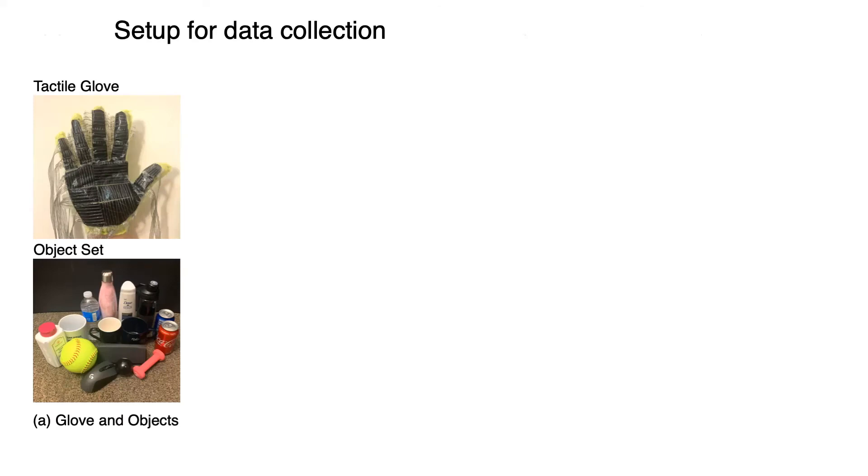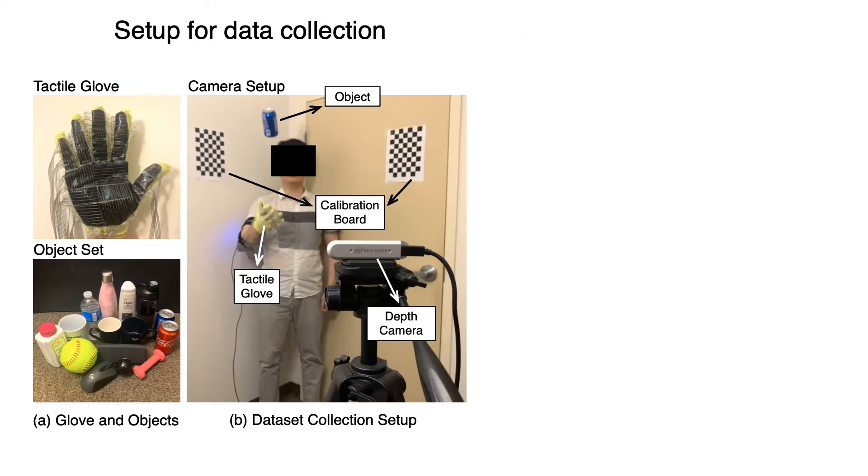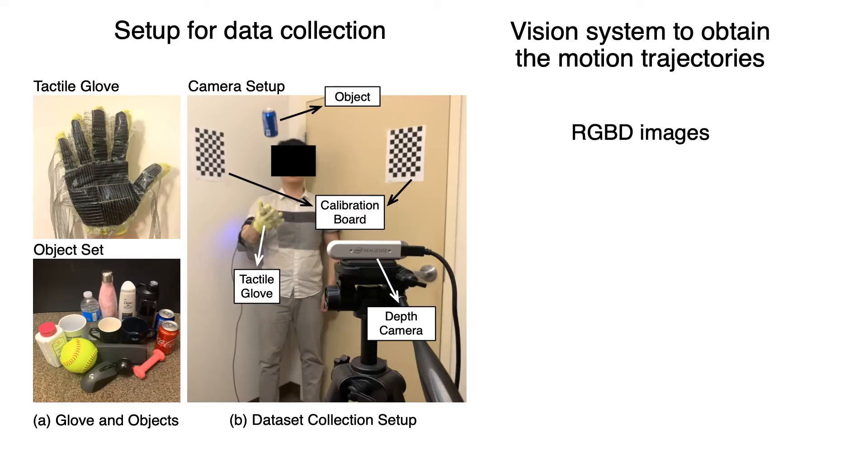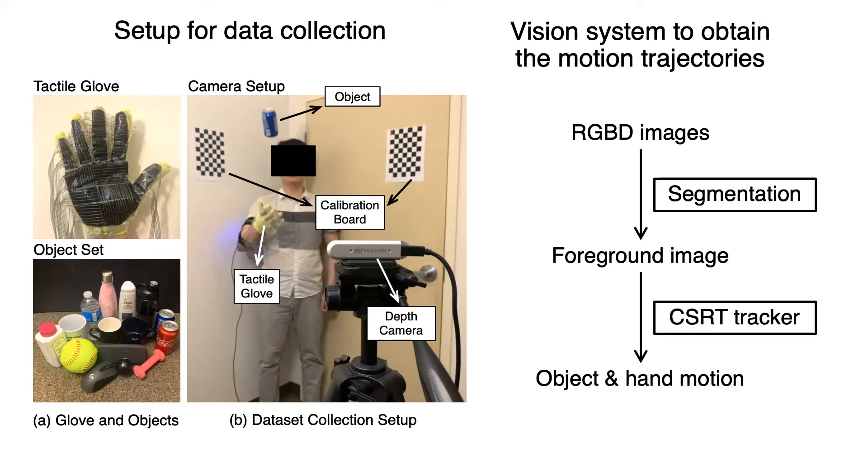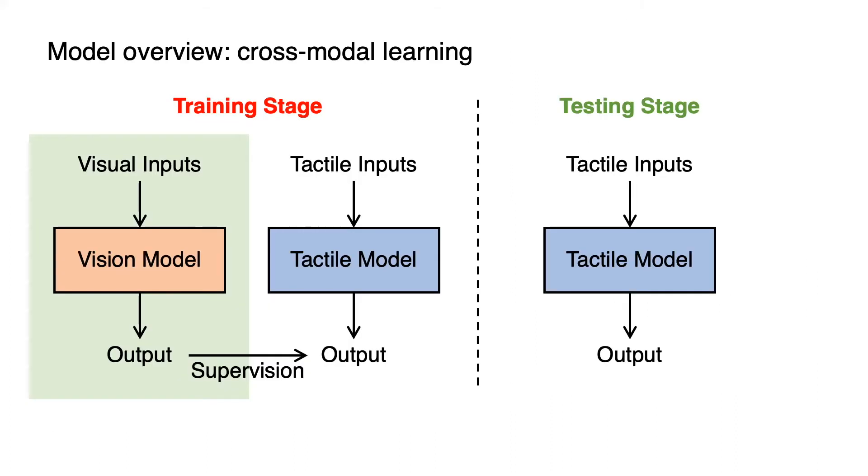We interact with a diversified set of objects using the tactile glove and collect synchronized RGBD images. We use a classic vision pipeline to estimate the object and hand's motion. Specifically, we first segment the foreground using the depth information, and then use the CSRT tracker to obtain the ground truth movements of both the objects and the hand, which corresponds to the green region shown on the left side of the training stage.